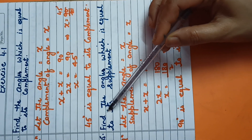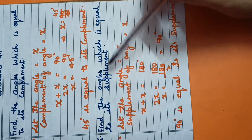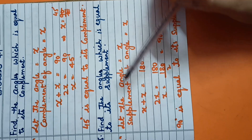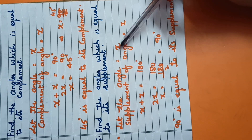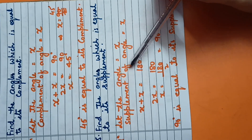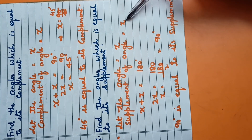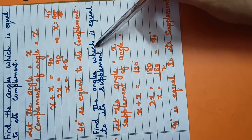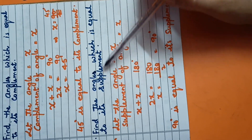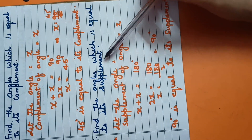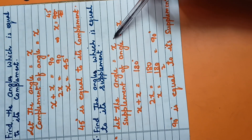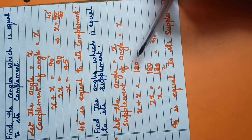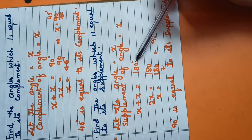Question number 5: find the angle which is equal to its supplement. Let the angle be x, then the supplement of this angle is also x, because the question says the angle is equal to its supplement. So, angle is x and supplement is also x. The sum of these two angles is 180 degrees.